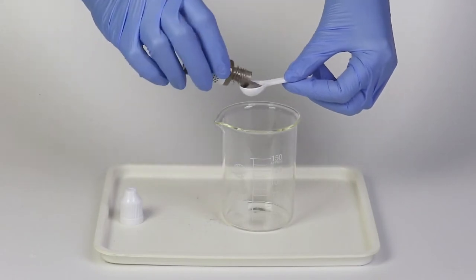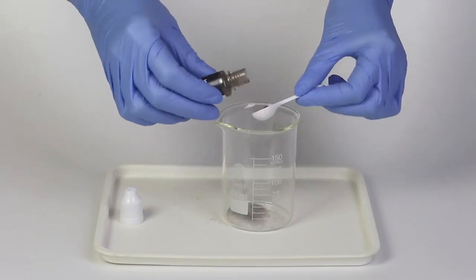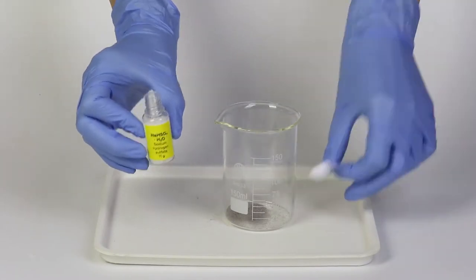Add two big spoonfuls of this mixture to the beaker. Next, add two big spoonfuls of Sodium Hydrogen Sulfate.